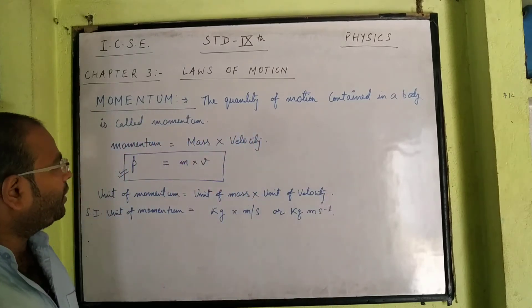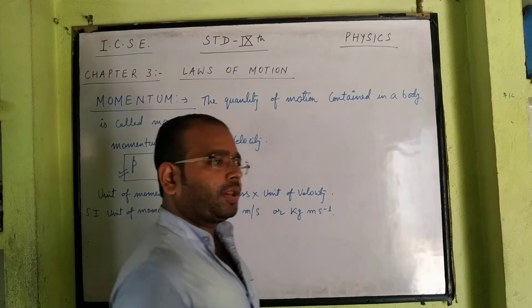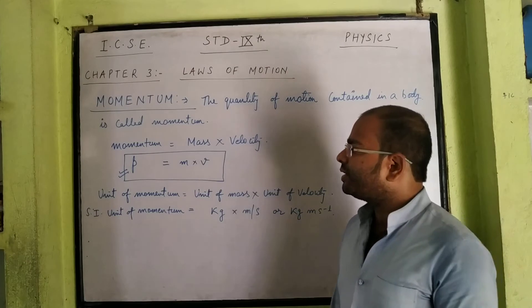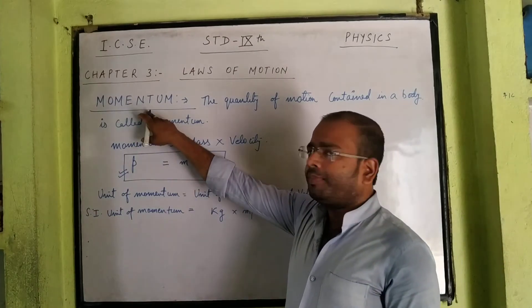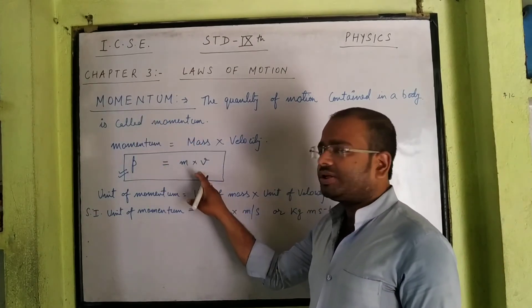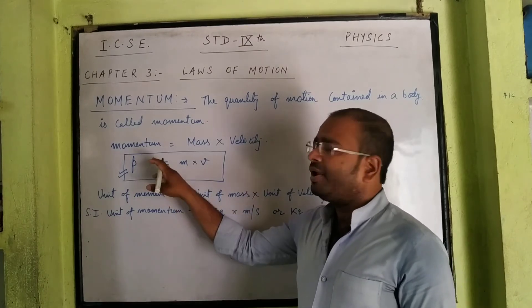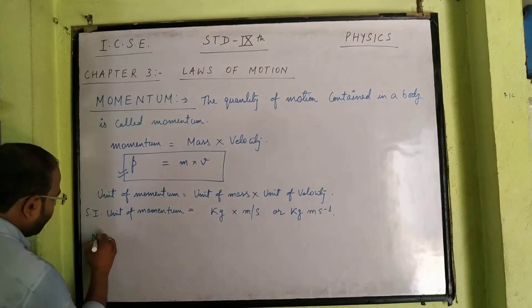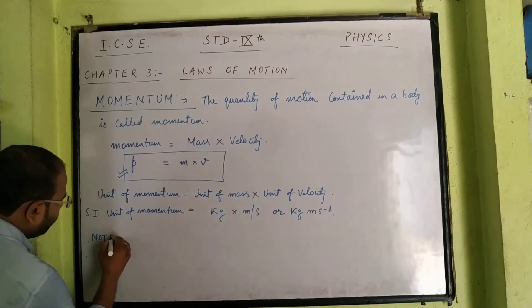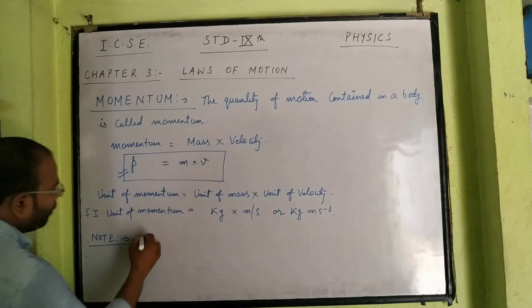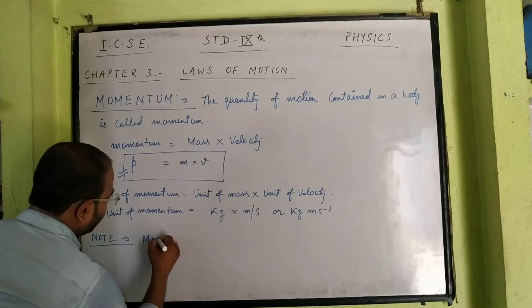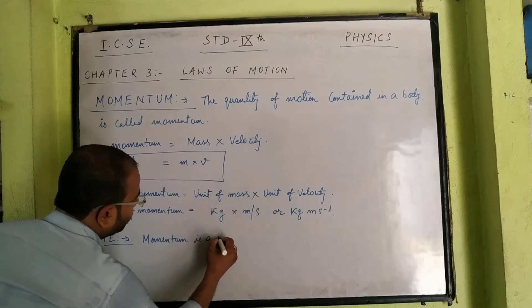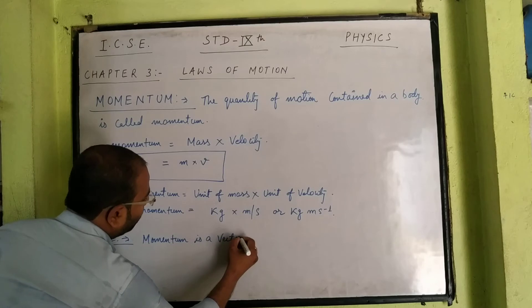Now that we have finished the discussion of momentum, we can start Newton's 2nd Law. One important point: momentum is derived from velocity, and velocity is a vector quantity. That is why momentum is also a vector quantity — it has both magnitude and direction.